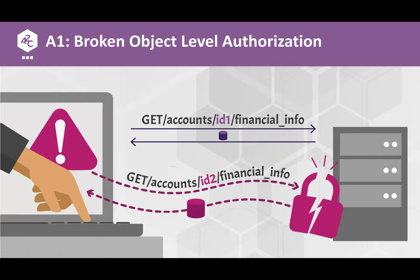Number ten is Insufficient Logging and Monitoring. Machine learning and blockchain are great, but your event logs are even more important. If bad things happen, you need to know about them. From your monitoring system you need to be notified that something bad is occurring, and from your logs you need to be able to figure out exactly what happened.